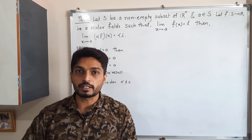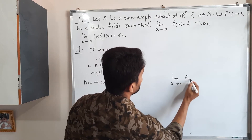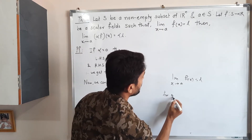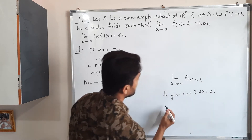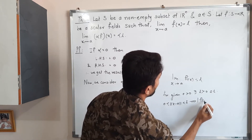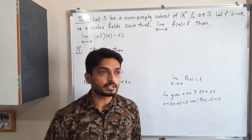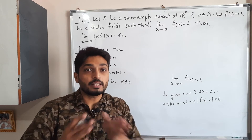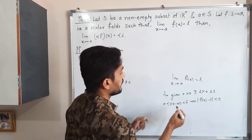Recall the epsilon-delta definition: when the limit of f(x) as x tends to a is l, for a given epsilon greater than zero there exists delta greater than zero such that zero less than |x − a| less than delta implies |f(x) − l| less than epsilon. This is simply a revision of what we covered previously.